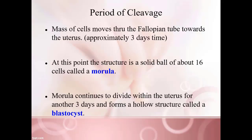This mass of cells moves from the fallopian tube toward the uterus, taking about three days. At this point, the structure is a solid ball of cells, between 16 to 32 cells in number, called a morula. The morula will continue to divide within the uterus for another three days or so, then hollow out to form a hollow structure called a blastocyst.